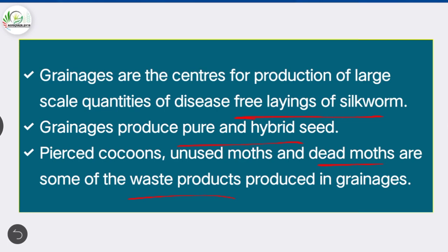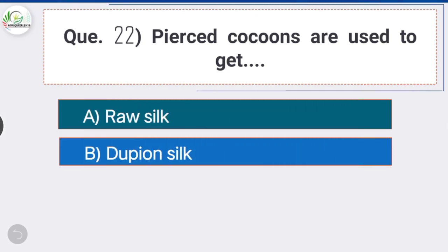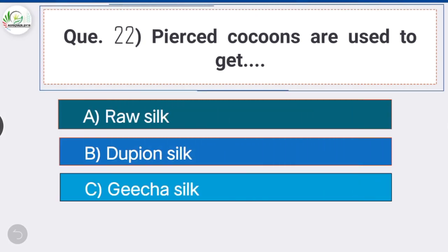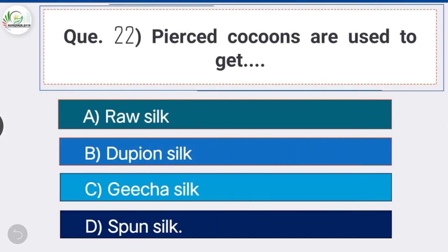Question number twenty-two: pierced cocoons are used to get — option D is the correct answer — spun silk. Spun silk is made from short lengths obtained from damaged cocoons or broken off during processing, twisted together to make yarn.